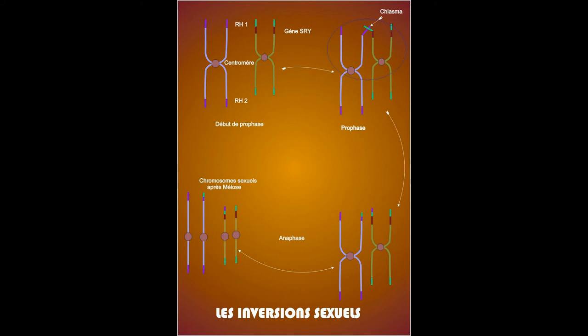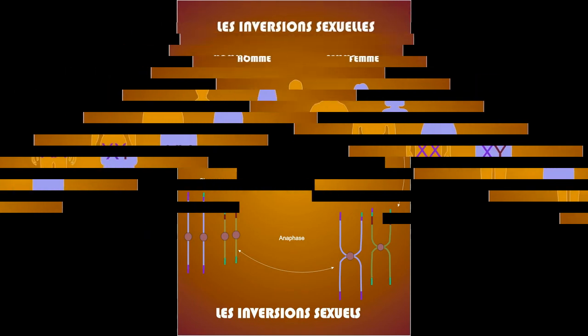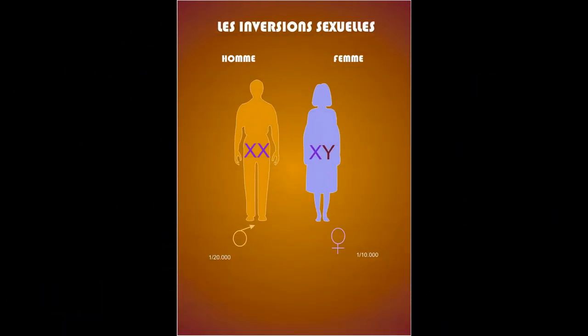To simplify things, we have XY individuals but with female phenotype, and XX individuals but of male phenotype. The most important thing to remember, and you will ask me why this recall? Simply, it will be useful to you in the next video.